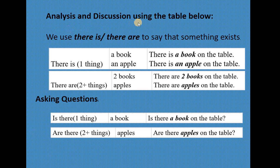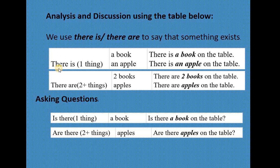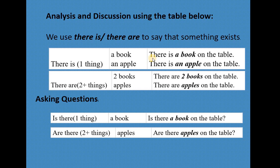Let's move on to our analysis and discussion using the table on the use of 'there is' and 'there are.' We use 'there is' and 'there are' to say that something exists. Emphasize to the students that we use 'there is' if we are talking about only one thing — for example, a book or an apple. There is only one book and there is only one apple. Example: 'There is a book on the table.' How many books are we talking about? Only one. So we have to use 'there is.'